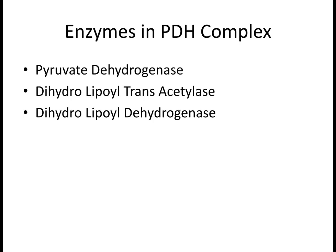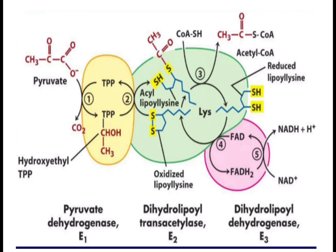Let us see in detail the function of all the enzymes and coenzymes in the conversion of pyruvate to acetyl-CoA by oxidative decarboxylation. Pyruvate is decarboxylated by the first enzyme of the complex, pyruvate dehydrogenase. During decarboxylation, thiamine pyrophosphate accepts the carbon skeleton and is converted into hydroxyethyl thiamine pyrophosphate.